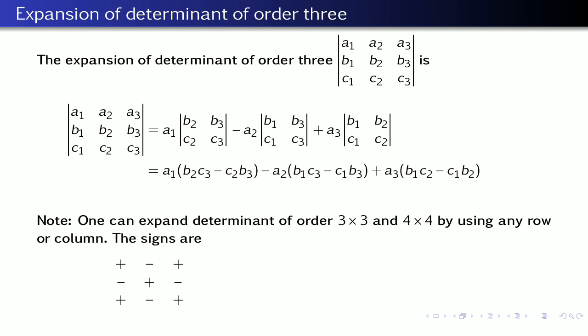One can use the same technique to find the signs for a 4×4 matrix. For the first row, the signs start from plus and alternate: plus, minus, plus, minus. In the first column the first sign is plus and the second is minus. Writing the second row signs row-wise: minus, plus, minus, plus. The third row: plus, minus, plus, minus. And the last row: minus, plus, minus, plus.